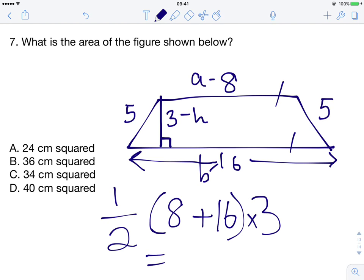So 8 plus 16 is 24, so we have a half times by 24 times by 3. 24 times by 3 is 72, divided by half is 36.